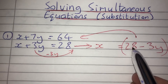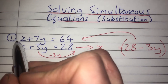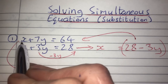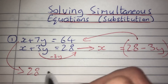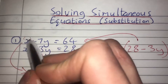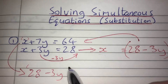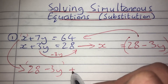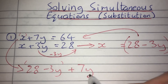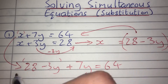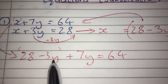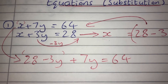Now that I know x equals 28 minus 3y, I can substitute this expression into the first equation, replacing x. So instead of writing x, I write 28 minus 3y, then write the rest of the equation as it is: plus 7y equals 64. What I have now is an equation that involves just y, and I can solve that.